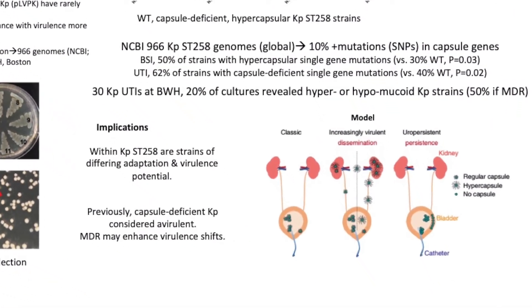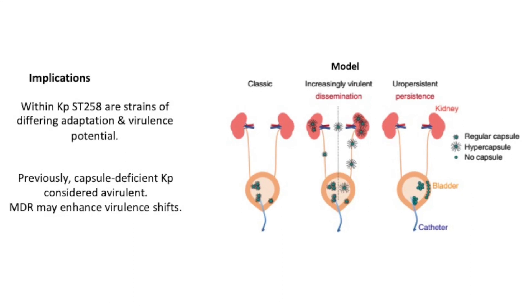On the bottom right is a model summarizing what's been described: if a strain has a hypercapsular form, it's more likely to disseminate and cause infections at distal sites, and if it's capsule-deficient, it may be a strain able to persist in the urinary tract. So these are really direct clinical correlations between the way the bug looks on a plate, to the gene level, and then to human disease. Really a very revealing study.